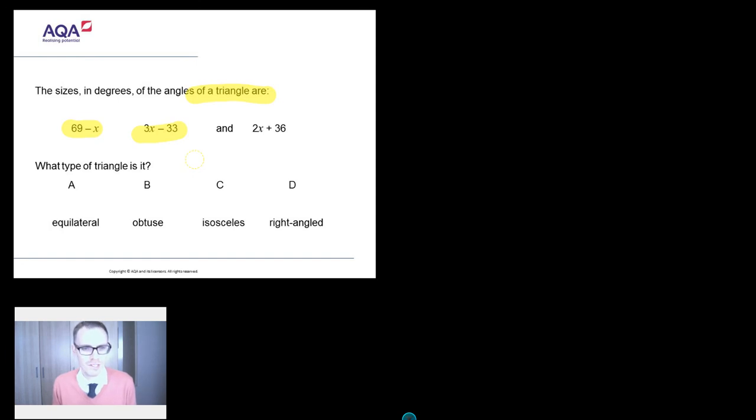What type of triangle is it? Equilateral, obtuse, isosceles, right-angled. So we've got angles, we've got algebra, and we've got types of triangle all rolled into one.